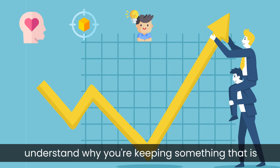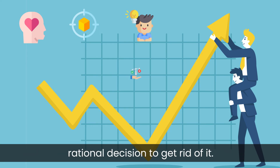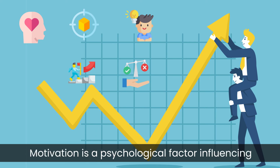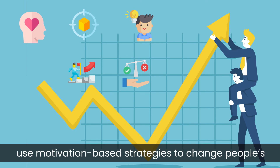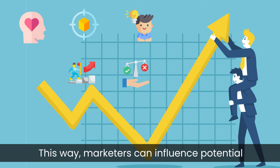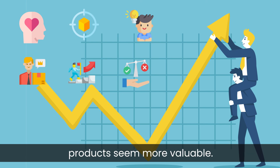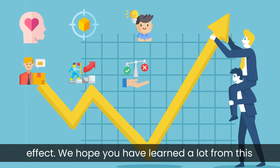Being informed about the bias will help you identify and let go of limiting thoughts. You will understand why you are keeping something that is not so useful to you, allowing you to make a more rational decision to get rid of it. Another way to avoid this bias is through the application of motivation — a psychological factor influencing consumer decision-making. Several industries use motivation-based strategies to change people's feelings about things, helping marketers influence potential customers to change their status quo or make their products seem more valuable.